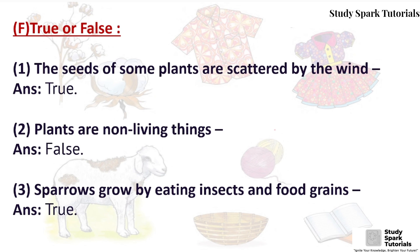True or False. First: The seeds of some plants are scattered by the wind. Answer: True. Second: Plants are non-living things. Answer: False. Third: Sparrows grow by eating insects and food grains. Answer: True.